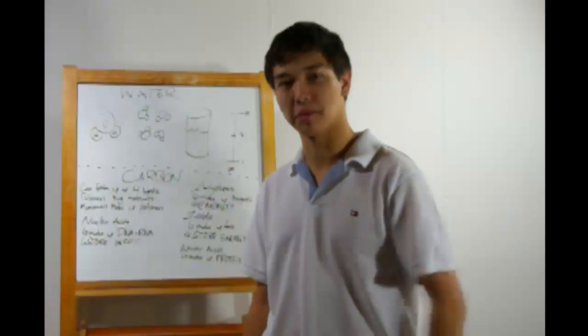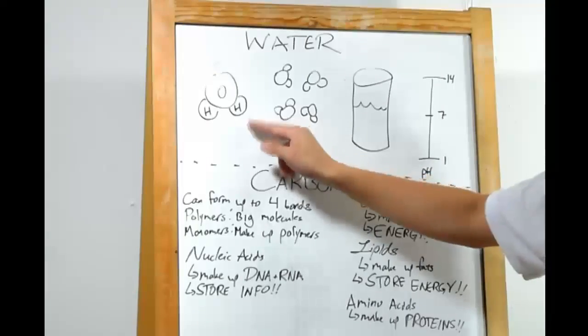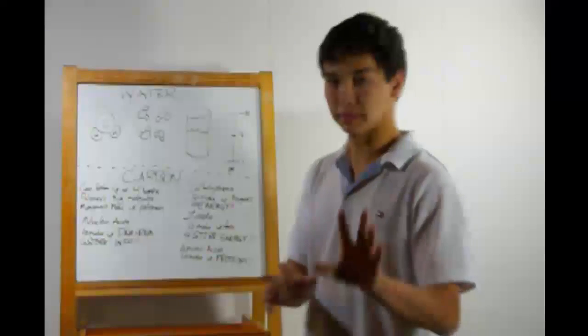Water and carbon are two important substances in high school biology, so we're going to hit them right now. Water consists of two hydrogens covalently bonded to an oxygen. I know it looks like Mickey Mouse drawing like this, bear with me.